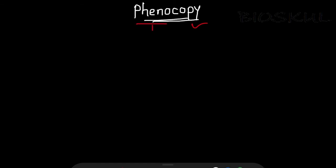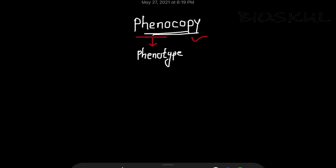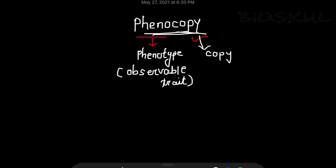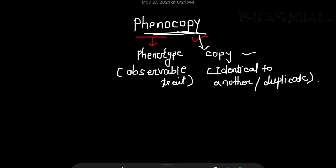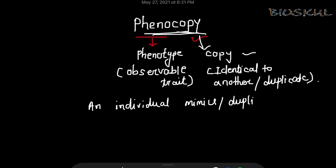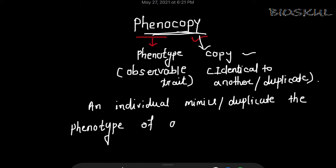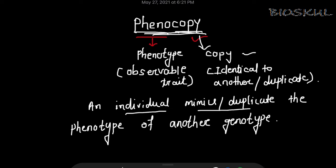Let's begin. First, understand the term phenocopy. 'Pheno' means phenotype — the observable trait. 'Copy' means duplicate or identical to another. So phenocopy means an individual mimics or duplicates the phenotype of another genotype. That is known as phenocopy.